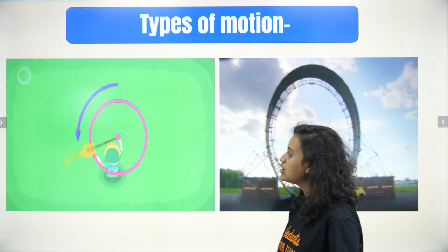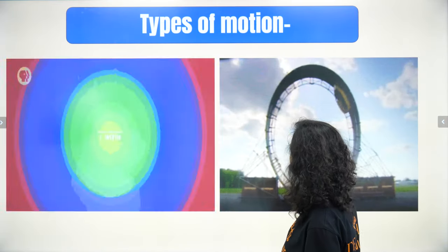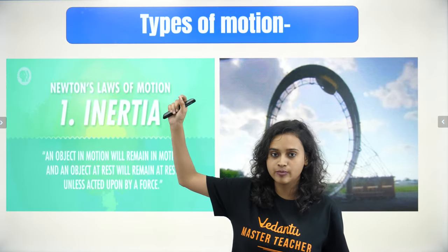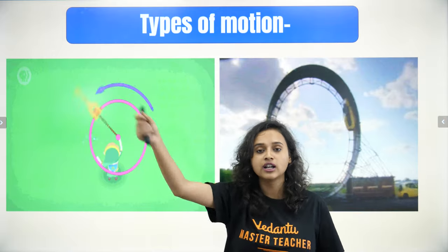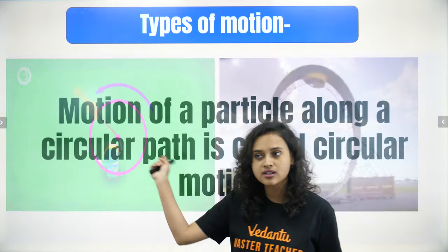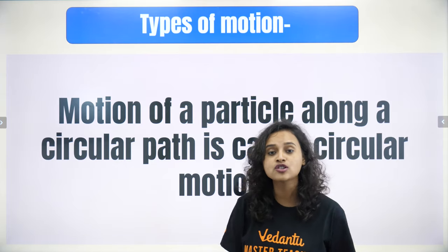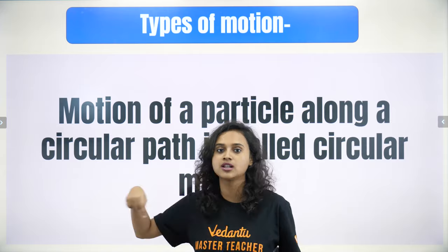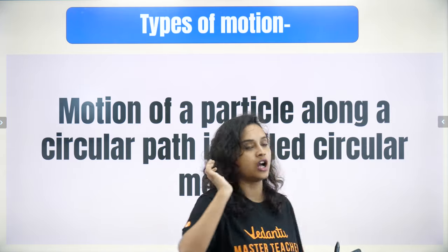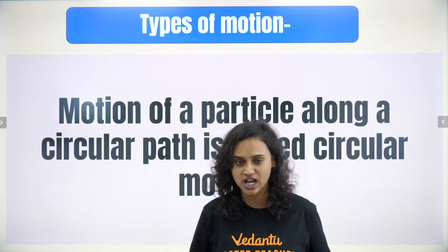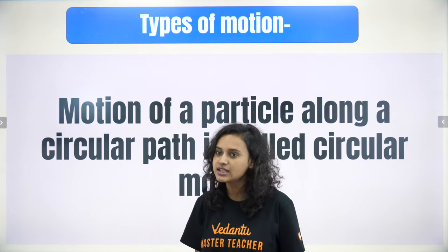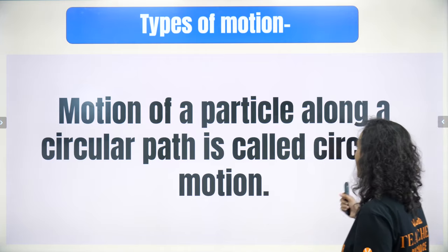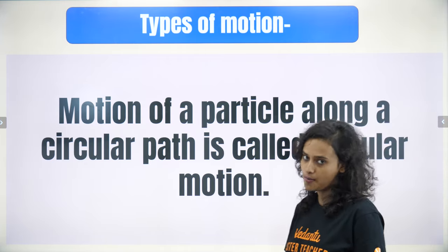Now look at this — a stone tied to a thread being swung around. The stone is moving in a circular path. Whenever an object follows a circular path, that is called circular motion. Definition: motion of a particle along a circular path is called circular motion.